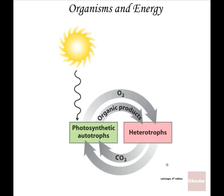Autotrophs cannot produce glucose unless they have carbon dioxide. During respiration, we all exhale carbon dioxide, and that is what is used by autotrophs to produce oxygen and glucose. We certainly have an overabundance of carbon dioxide that is produced by the heterotrophs.